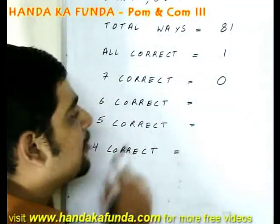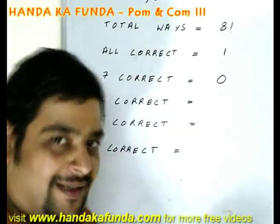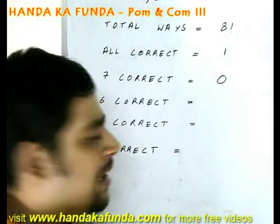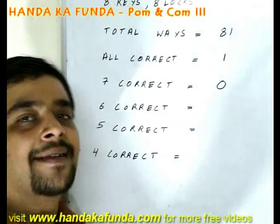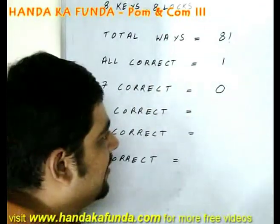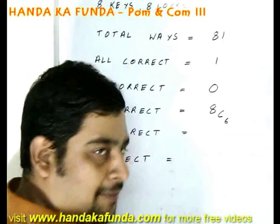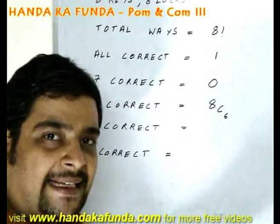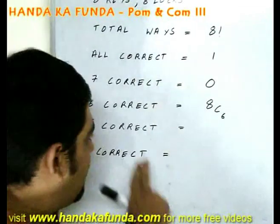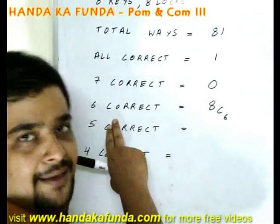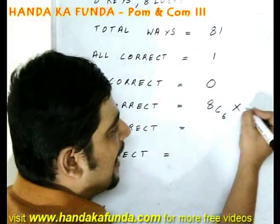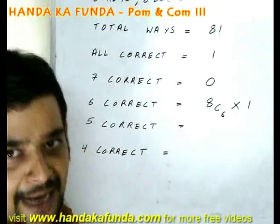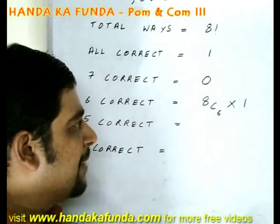How about 6 of them are correct and 2 are wrong? That is possible. In how many ways can you first select the 6 keys which are correct? I can do that in 8C6 ways. Then in how many ways can I put the right keys in the right locks? The 6 right keys or the 6 correct keys in the 6 locks? I can do that in only one way.